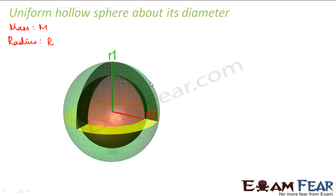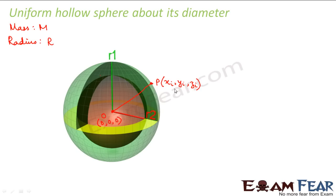Now let us assume any point P on the surface of the sphere. The coordinate of this point will be given as xi, yi, zi. Let us assume that the center of the sphere is considered as the origin. So the coordinate of the center will be 0, 0, 0. The position vector of this point P is given as xi, yi, zi.